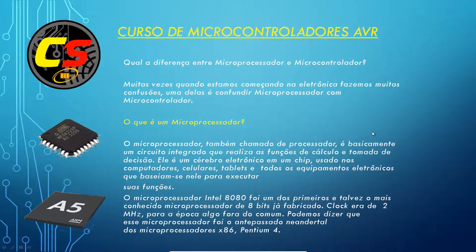Vamos falar um pouquinho sobre a diferença entre microprocessador e microcontrolador. Muitas vezes as pessoas confundem uma coisa com outra, mas não são iguais — existem diferenças gritantes. O que é um microprocessador? Um microprocessador — às vezes também chamado de processador — é um circuito integrado que realiza funções de cálculo e tomada de decisão. É o cérebro eletrônico em um chip, muito utilizado em computadores, celulares, tablets e outros equipamentos eletrônicos. O microprocessador Intel 8080 foi um dos primeiros e talvez o mais conhecido microprocessador de 8 bits, com clock de 2 MHz — algo fora do comum para a época. Ele foi o pontapé inicial para o surgimento dos posteriores microprocessadores x86 e Pentium.